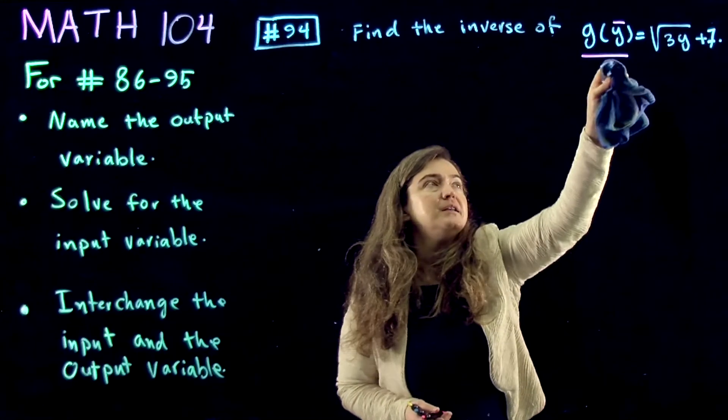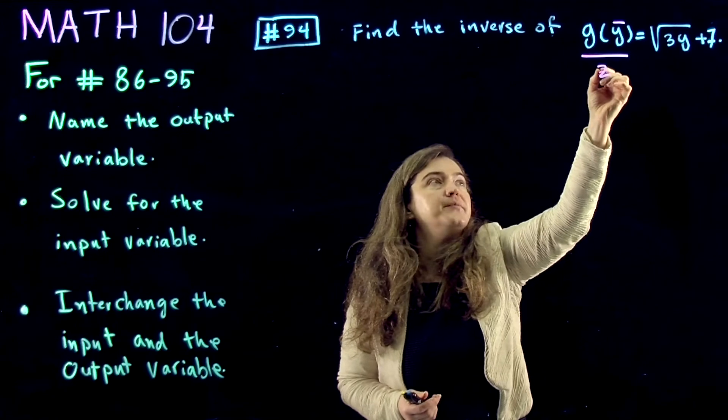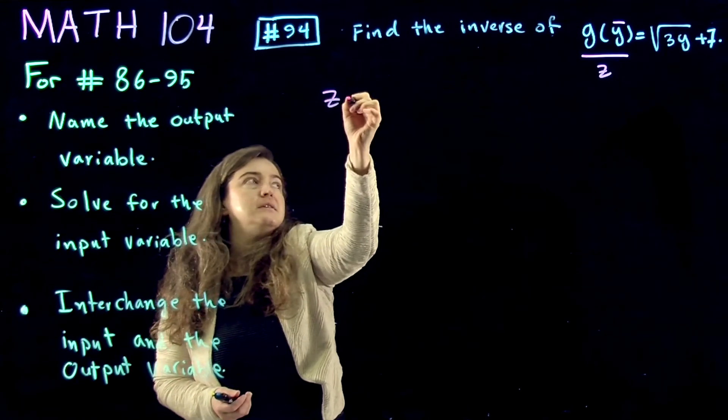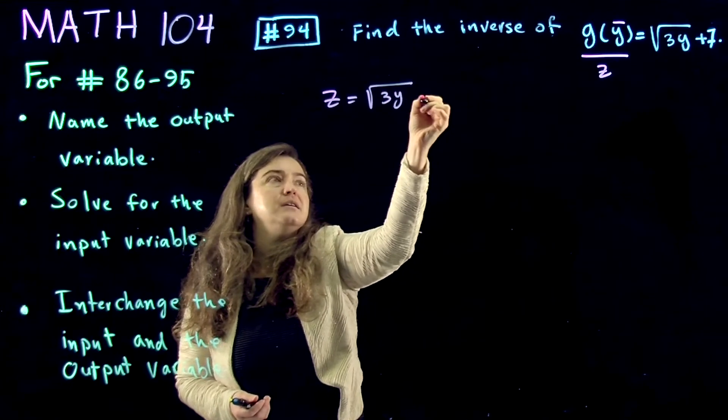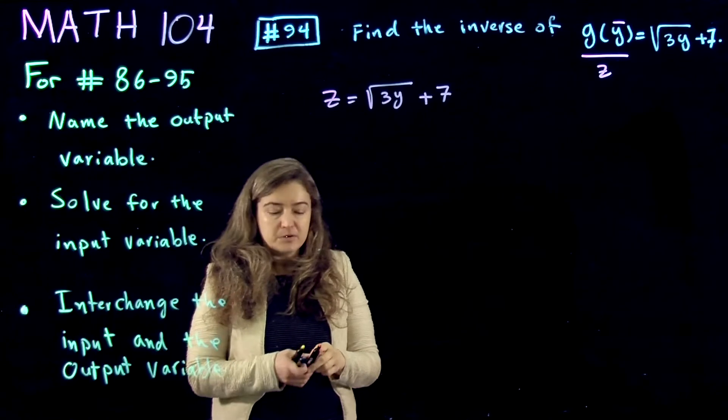So I'm erasing y and making it another name, let's say z. So z is equal to square root of 3y plus 7. Now what do we do?